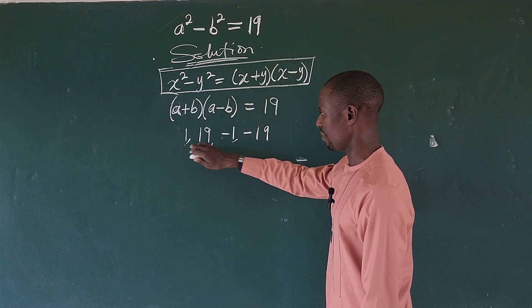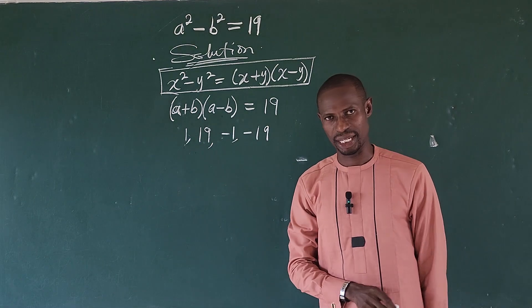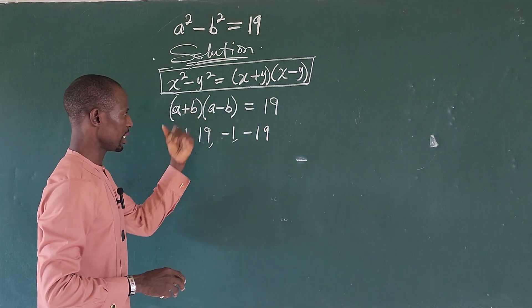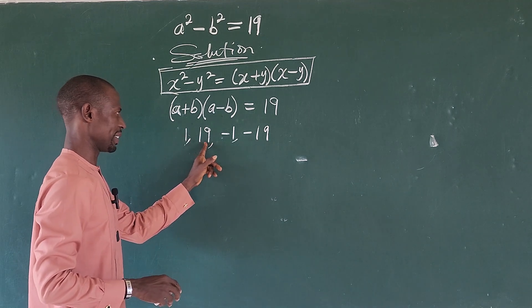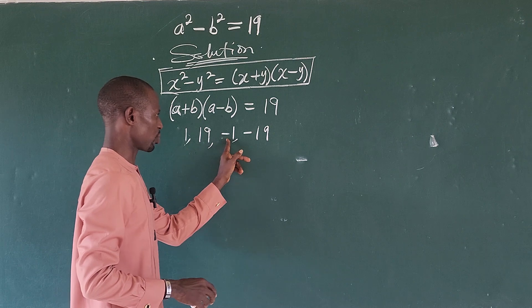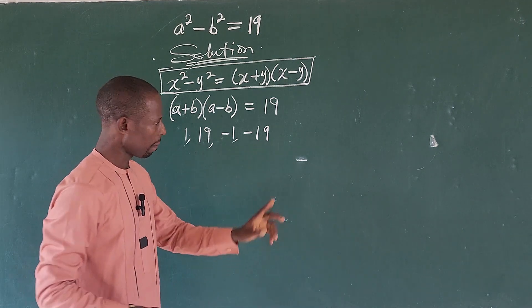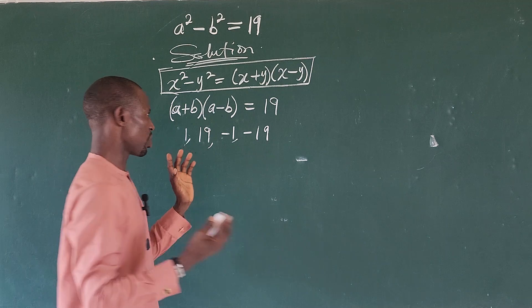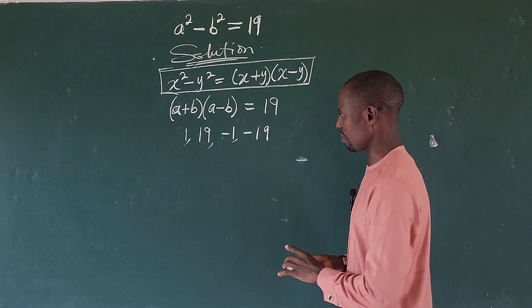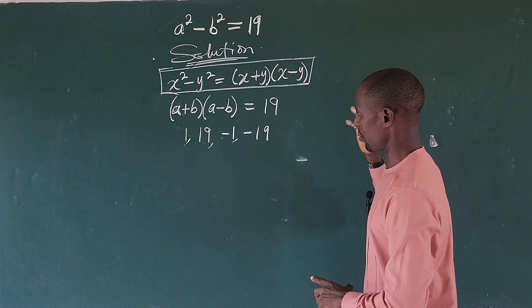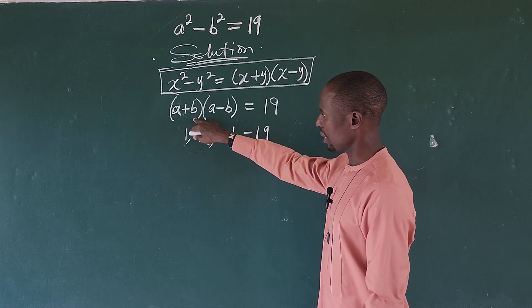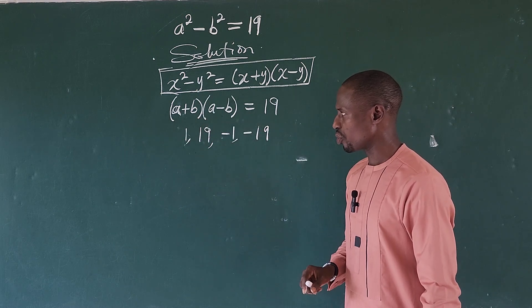So if we are having negative 1, then we are going to take 2 of these that will result to this. So automatically we are going to have the whole of this either equal to 1×19 or 19×1 or -1×-19. But we must put into consideration some case scenario here that will enable us to choose our factors on the right hand side carefully. Here we are having a+b and here we are having a-b. So what does that tell us?